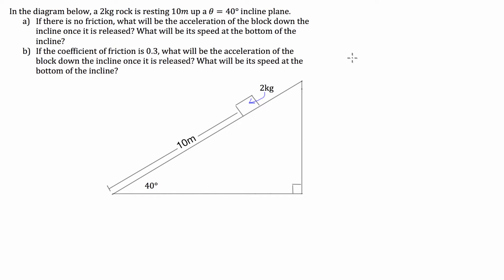In the diagram below, a two kilogram rock is resting 10 meters up a 40-degree inclined plane. First part, part A: if there is no friction, what will be the acceleration of the block down the incline once it is released?